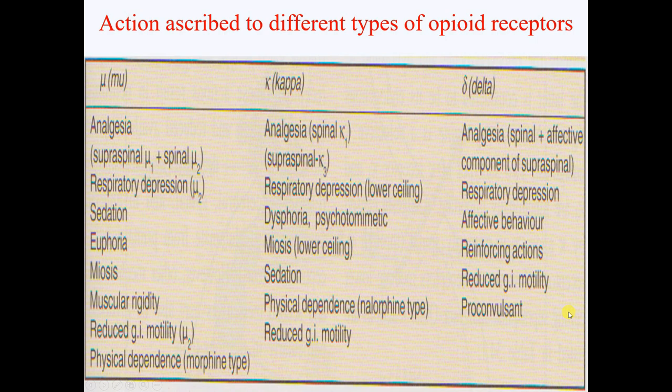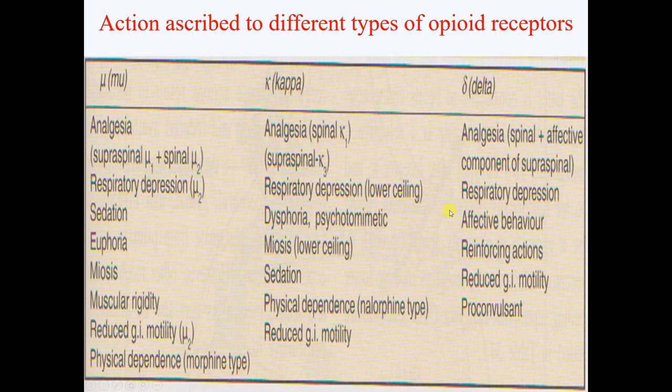Actions ascribed to different opioid receptors: Mu receptors mediate analgesia, respiratory depression, sedation, euphoria, miosis, muscular rigidity, reduced GI motility, and physical dependence — morphine type. Kappa receptors mediate analgesia, respiratory depression, dysphoria, psychotomimetic effects, miosis, sedation, physical dependence — dynorphine type — and reduced GI motility. Delta receptors mediate analgesia, respiratory depression, affective behavior, reinforcing actions, reduced GI motility, and proconvulsant effects.